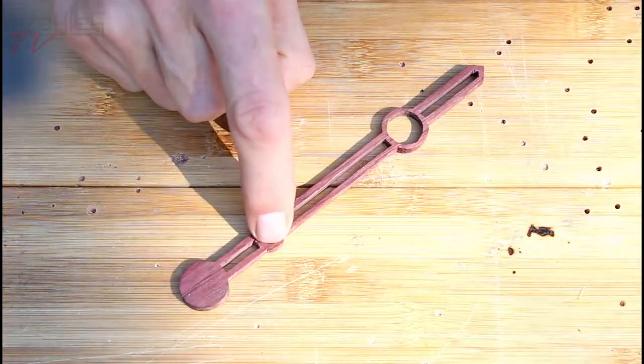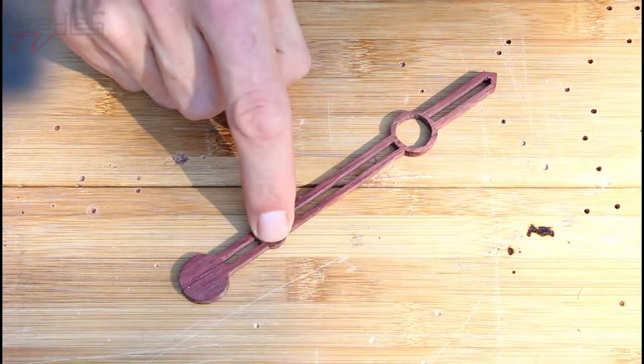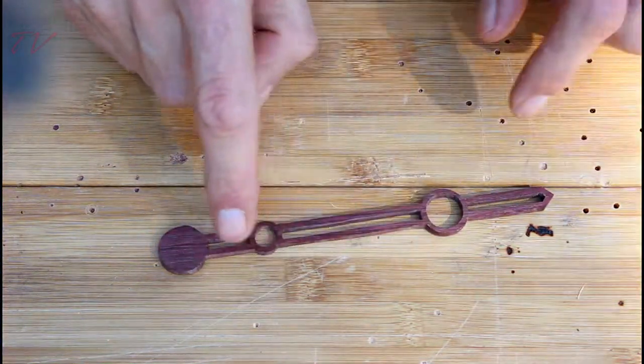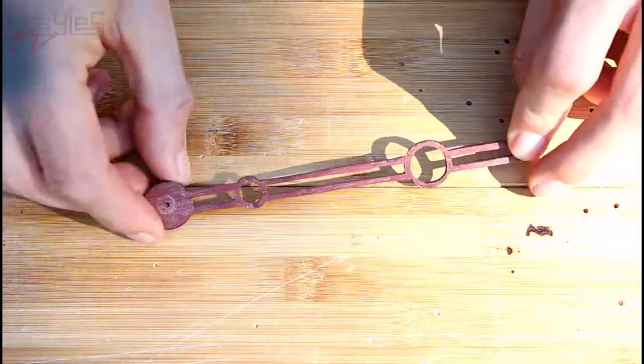So next job is going to be to set the brass arbor collar in here for the pivot. I'll epoxy that in place and get it flush with the top surface, which is this surface.